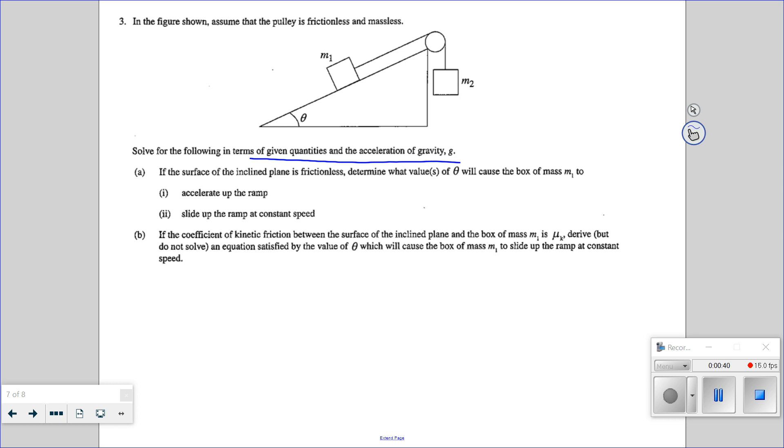Solve for the following terms and given quantities. Okay, the surface of the incline plane is frictionless. Mu equals zero. Determine what values of theta, so we're changing our ramp in this experiment. That's not going to happen on the test, but we could. We could do an experiment.